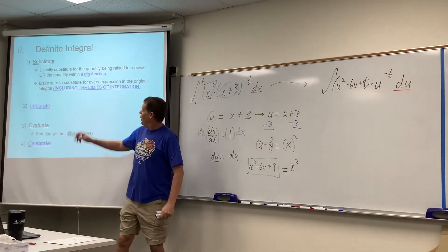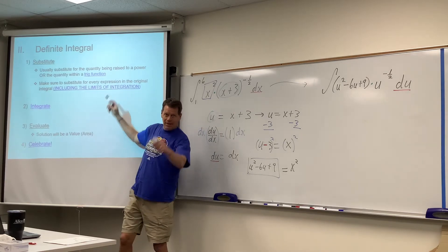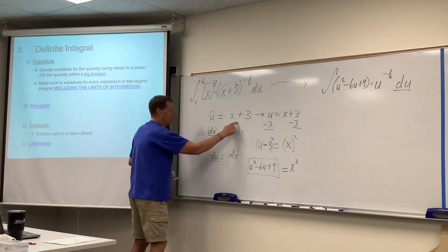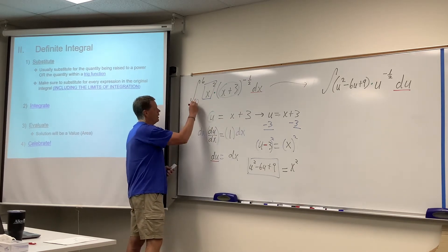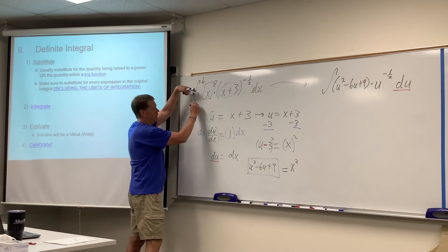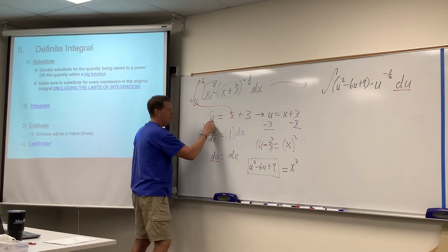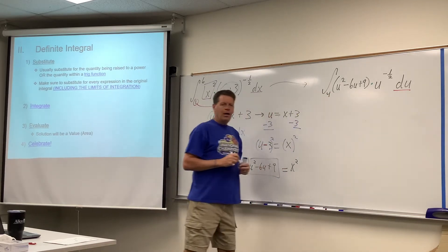We also need to remember to change your limits of integration. That would be easy to forget. Again, everything is built off of that original substitution. So if we take the value of 1 for x in the original question and put it in for x, 1 plus 3, u would equal 4. So that lower limit over here needs to be a 4.